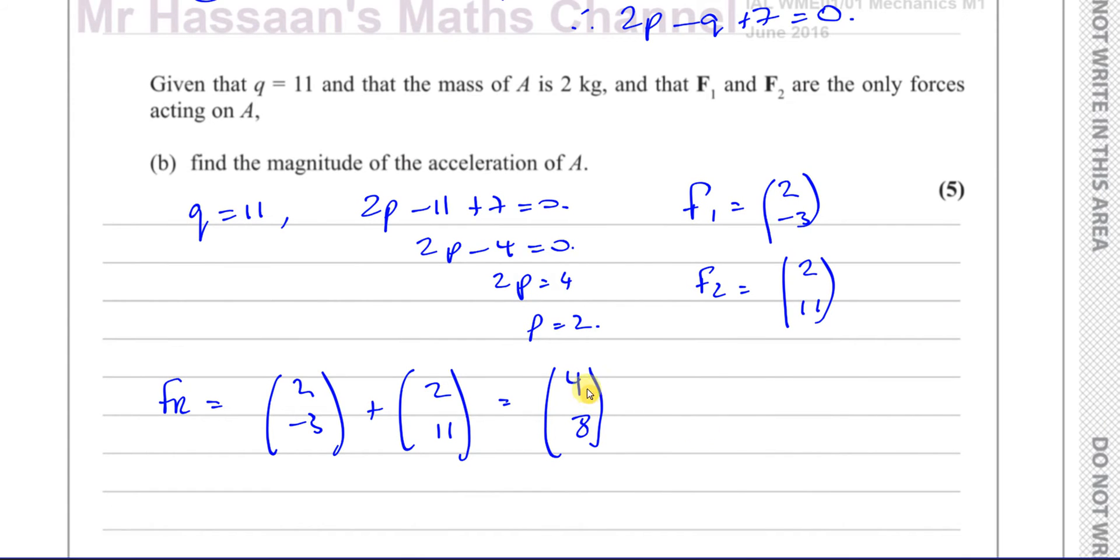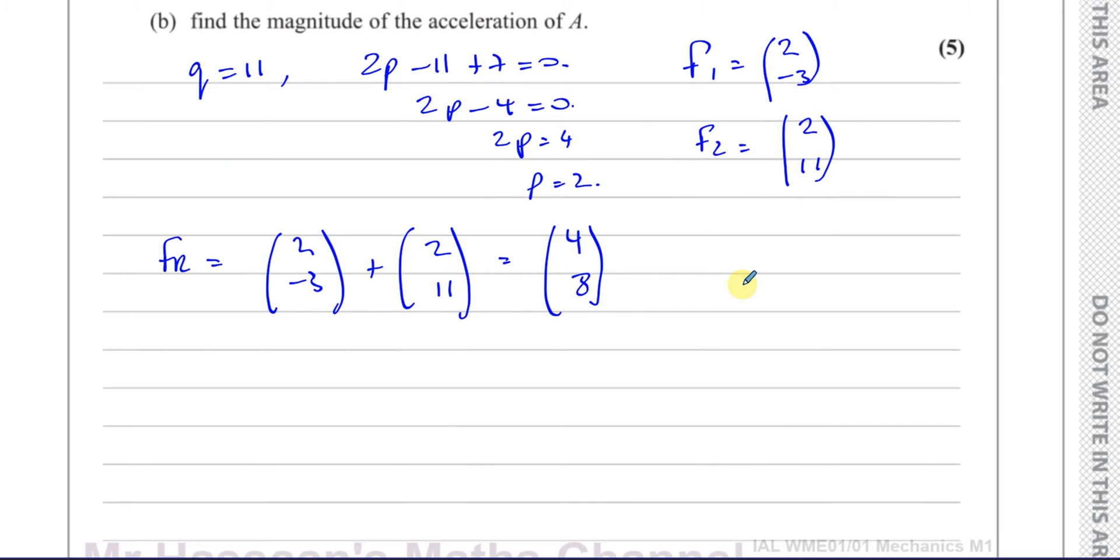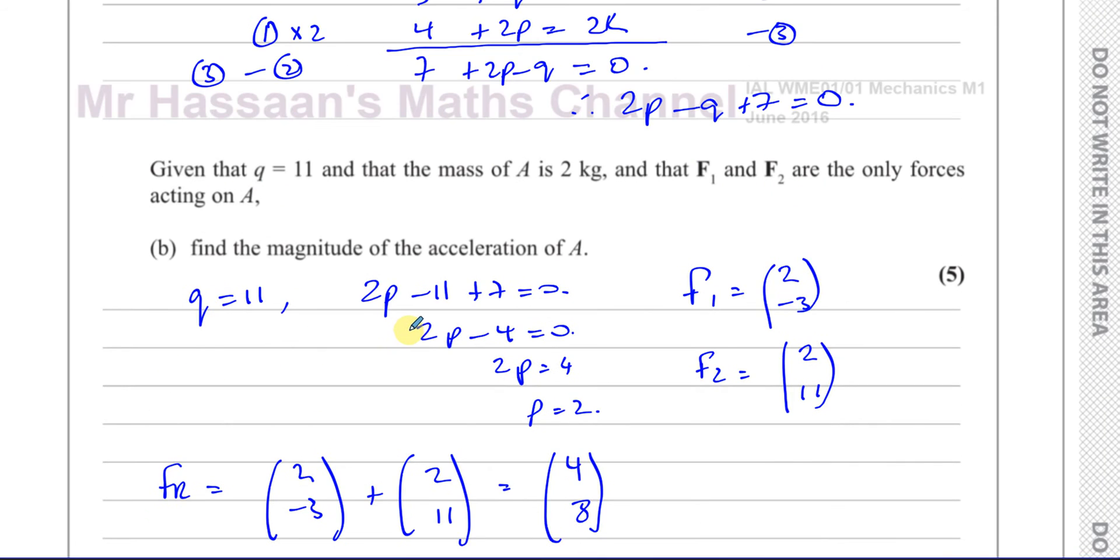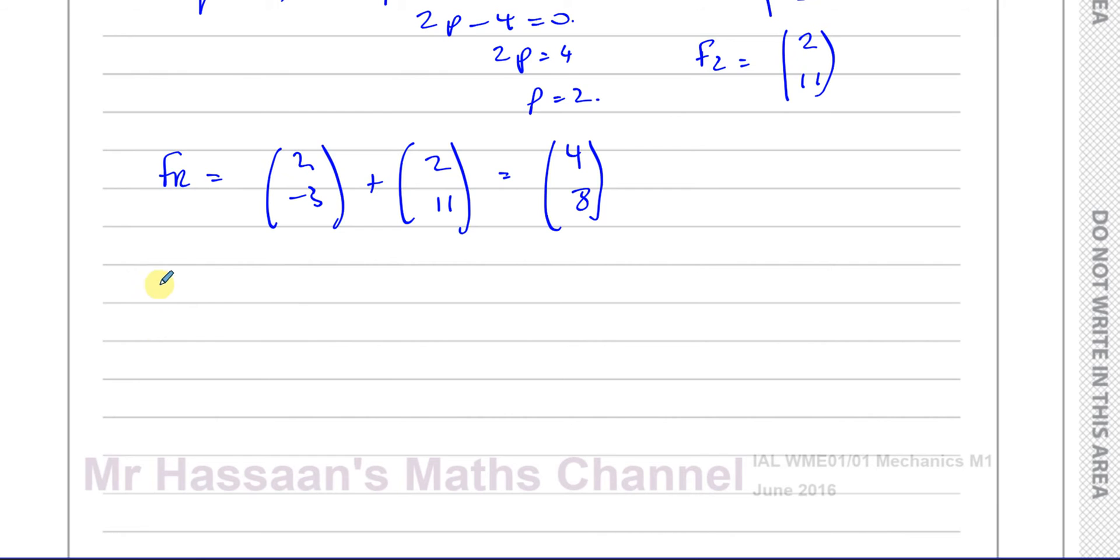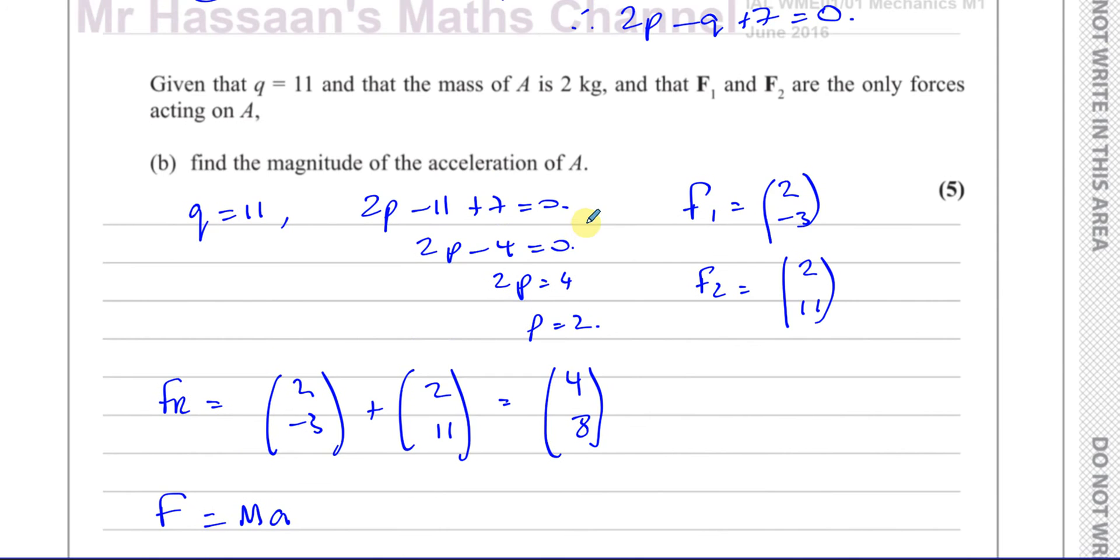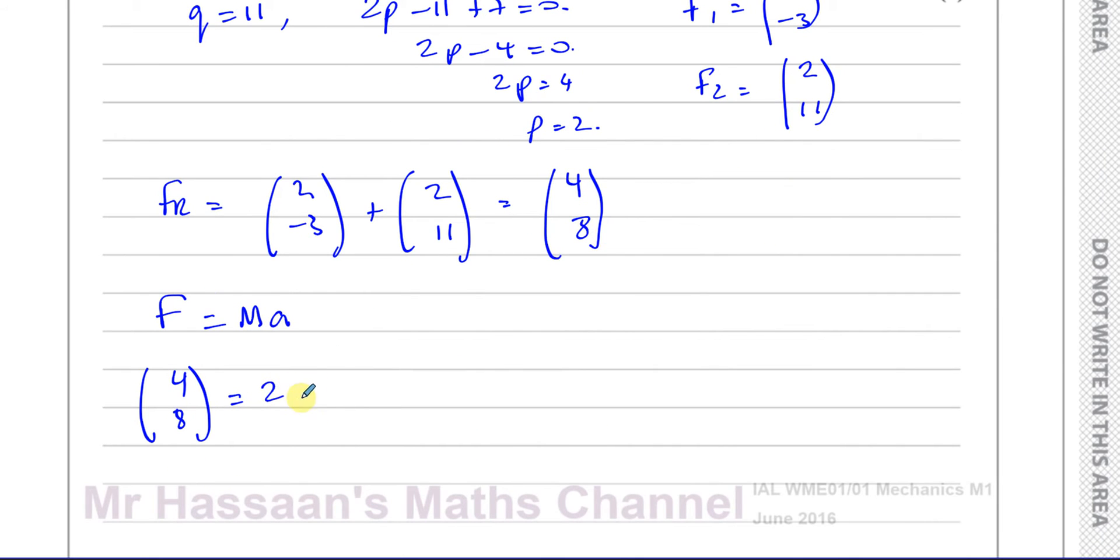So now we can find the magnitude and acceleration of A. These are the only forces acting on A, so we know that F equals MA. This is not the acceleration, this is the force. We want to find the acceleration. So we know that (4, 8) equals the mass, which is 2 kilograms, times A.